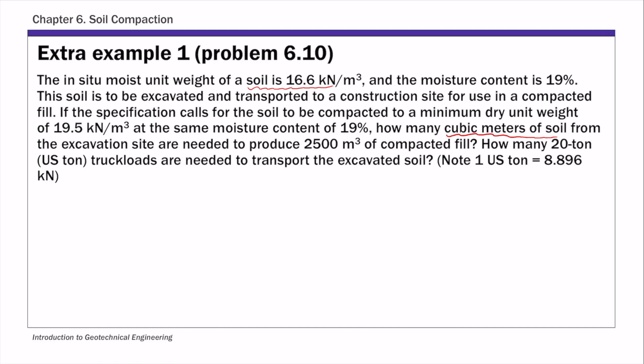We know its moisture content, and we also know the required unit weight of soil after compaction — that's 19.5. And to solve this problem, to estimate how many cubic meters, that's basically the volume of soil needed.